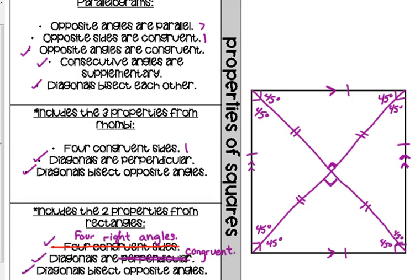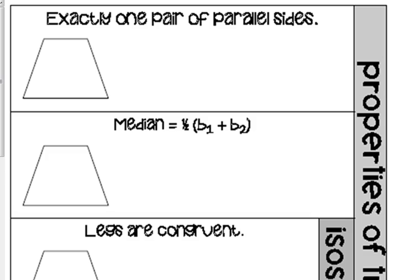Those are squares. Next: trapezoids. They are another form of quadrilateral, but they're kind of their own thing, because they don't have two pairs of parallel sides like all the ones we've talked about. Trapezoids only have one pair of parallel sides, typically drawn at the top and the bottom.